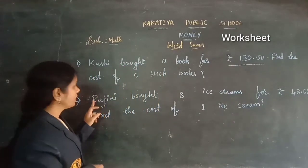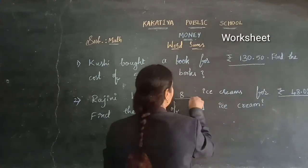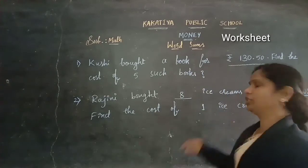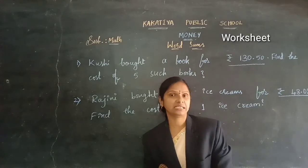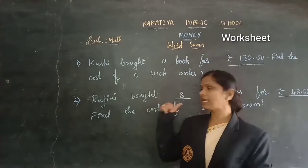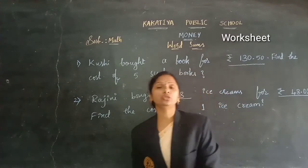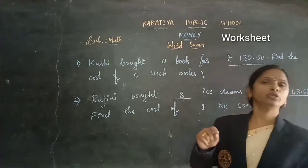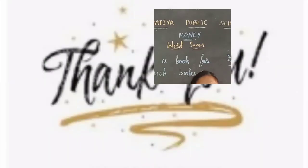Second problem: Allegheny bought 8 ice creams for 48 rupees 08 paise. Find the cost of one such ice cream. 8 ice creams cost is given — more we know, and 1 we are finding — so you need to do division. First problem you need to multiply, and the second problem you need to divide. Then you will get the answers of the given questions. Thank you. Bye.